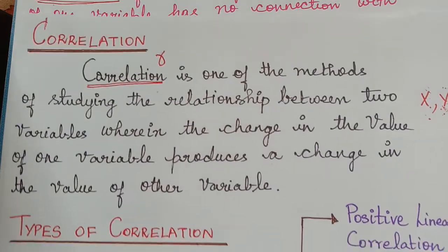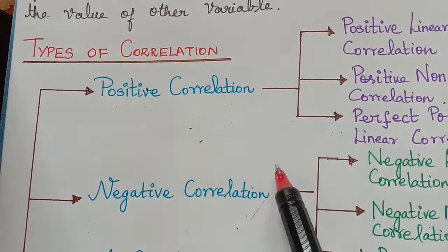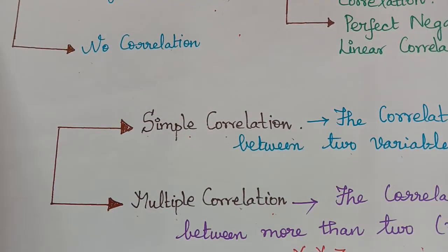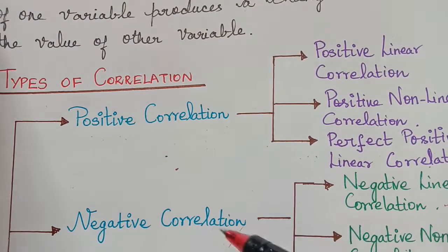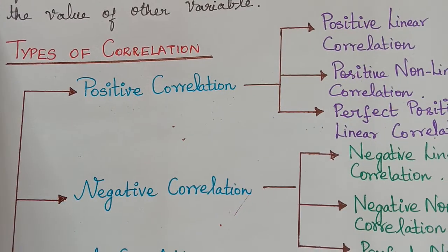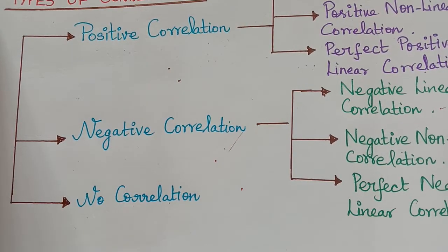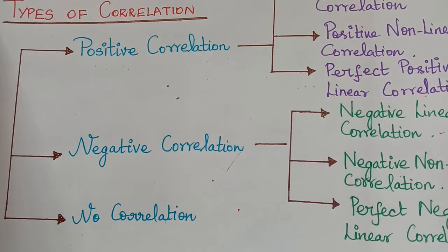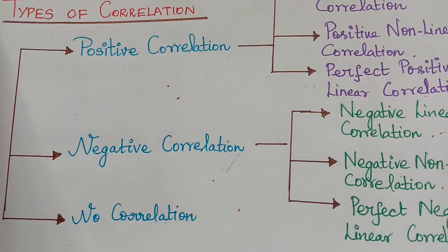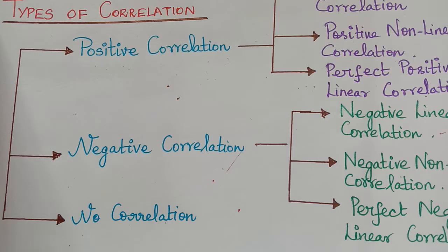In this lecture we learned about the definition of correlation, the types of correlation with respect to the change in the variable and with respect to the number of variables, and we learned what is positive correlation, negative correlation, and when two variables are uncorrelated. In our next video we will be learning about the measures of correlation, including the scatter diagram, the Karl Pearson formula for evaluating correlation, and the properties of the correlation value.